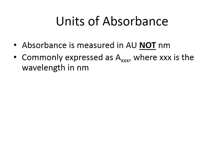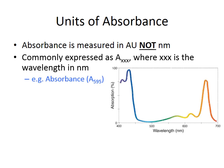Absorbance is measured in arbitrary units, not nanometers. However, it is common practice to advise readers what wavelength was used to measure absorbances by labeling an axis as A-subscript-XXX, where the three digits represent the wavelength in nanometers. For example, you may label an axis as A595, which tells readers that all readings were taken at 595 nanometers.